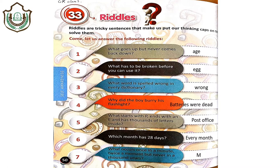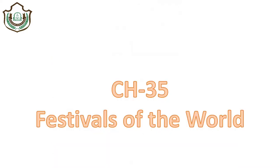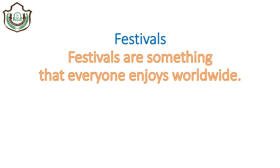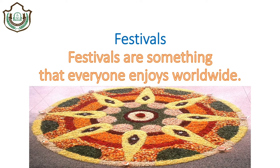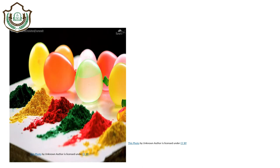I hope you have enjoyed these activities. Now, chapter number 35 — festivals of the world. Festivals are something that everyone enjoys worldwide. We have enjoyed and we celebrate festivals. It is a time when we wear new clothes, eat sweets and meet our family members. These are things that bring joy in our life, and festivals are celebrated worldwide. The festival of color is Holi, and the festival of light is Diwali, when we burn crackers, eat sweets, wear new clothes and worship.